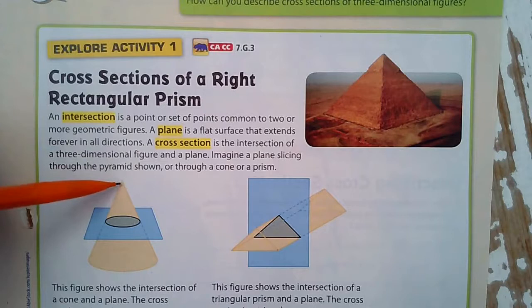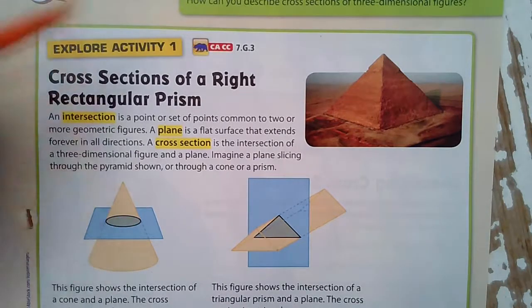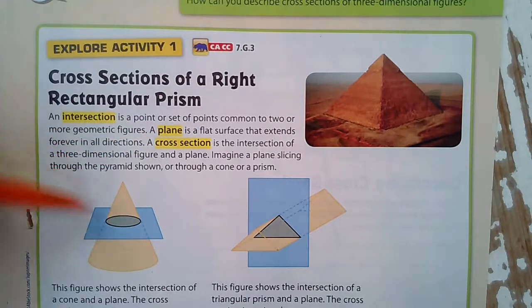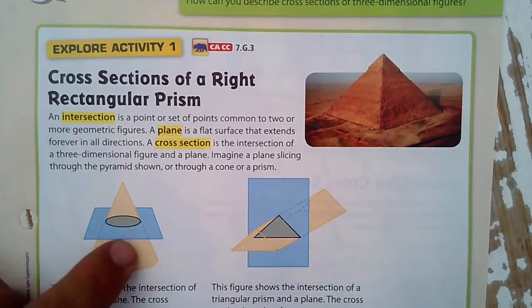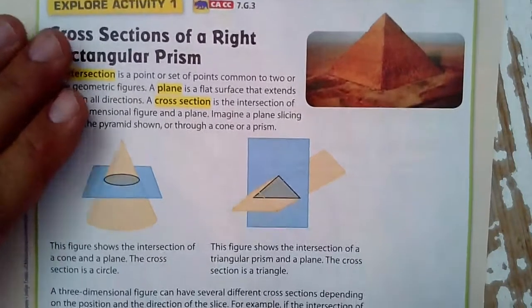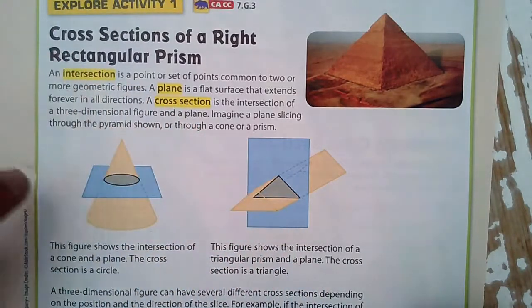And like an intersection would be here. Two or more things cross. A plane is a flat surface that extends forever in all directions. So what we're talking about here is this blue thing supposed to be a plane. It's supposed to be slicing through this cone shape.